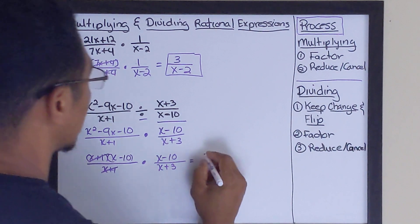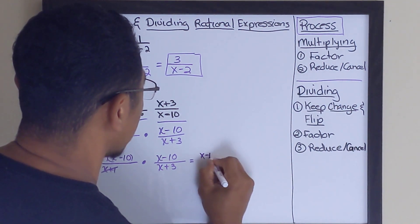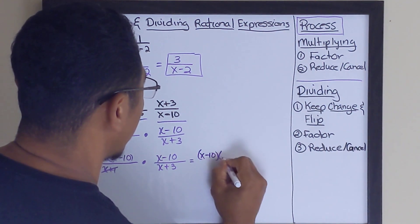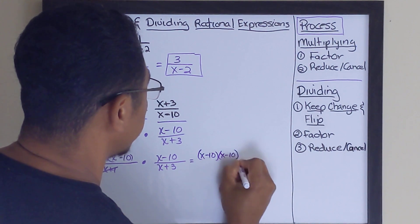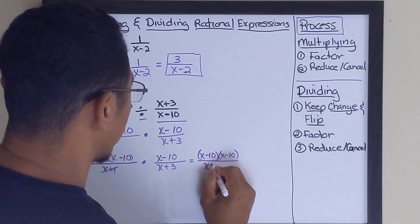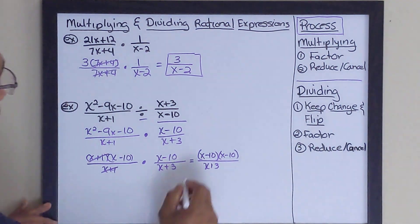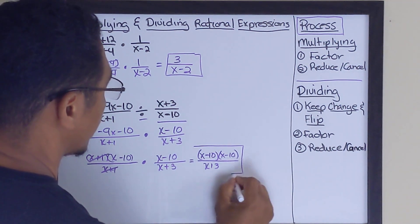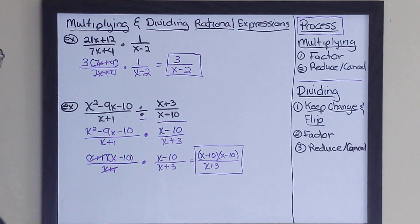So we're going to multiply x minus 10, x minus 10, which gives us x minus 10, x minus 10, all over x plus 3. So this is our answer for this particular division problem.